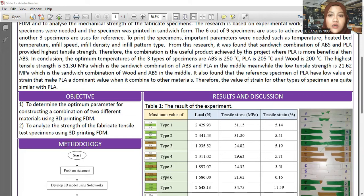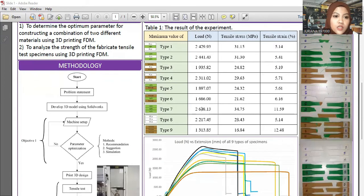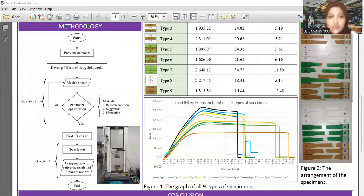We can get the stress and strain for each specimen. Moving to the methodology: first, start and identify the problem statement; then develop the 3D model using SolidWorks; then machine setup with the parameters; and then parameter optimization. In this parameter optimization phase, there are three methods: recommendation from literature review, suggestion from lab assistants, and simulation.